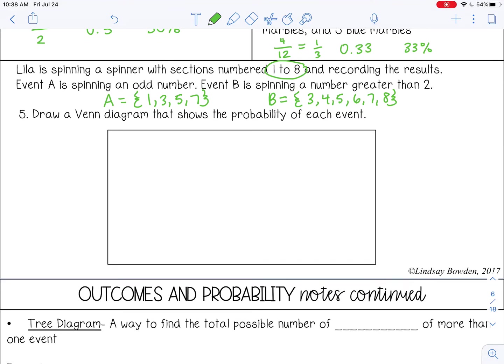Draw a Venn diagram that shows the probability of each event. So let's draw our two circles. First, let's fill in the numbers like we did for set theory before we write the probability. We'll start in the middle of the intersection. So that's the numbers that both sets have in common. That would be 3, 5, and 7. And then I'm going to fill in what's left over. So 1 over here, 4, 6, and 8 over here. Now we are missing 2. That doesn't fall on either set, but it's still part of the universal set, so that goes out here. And that should be everything.